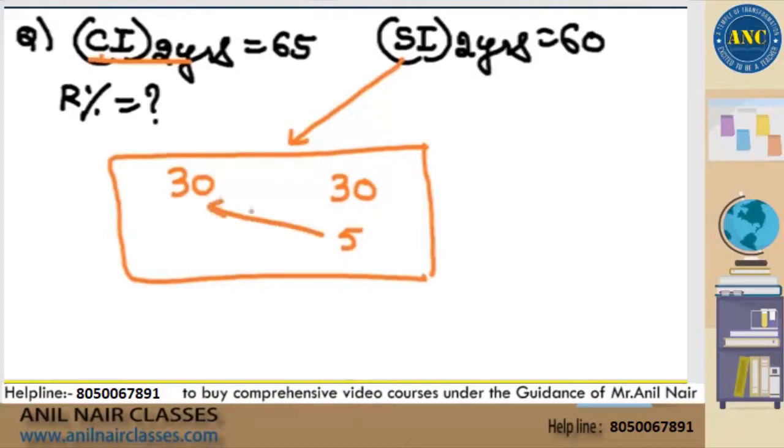This 5 is taken on 30. 5 by 30. 5 by 30 is 1 by 6. 1 by 6, answer is 16.67%.